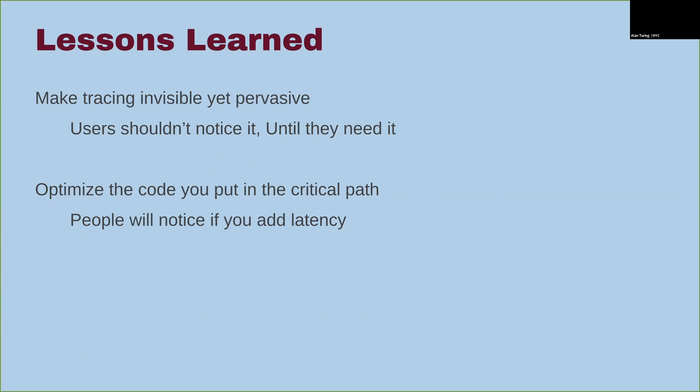Next: tracing needs to be invisible yet pervasive. Tracing needs to be everywhere — in every system that people could want to debug — but it shouldn't really be visible until they need it. Put it deep in your systems, make sure it's there, but no one should notice the added latency. No one should really know it's there until something breaks and they need to go debug it.